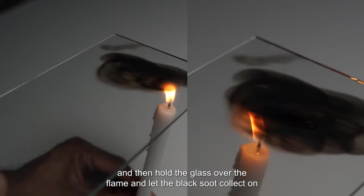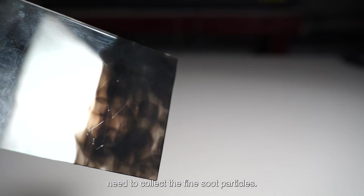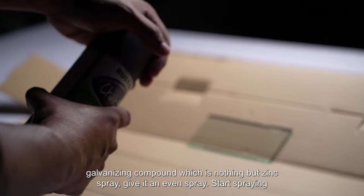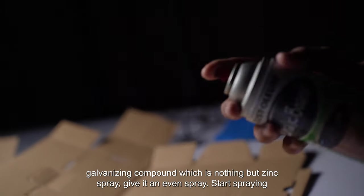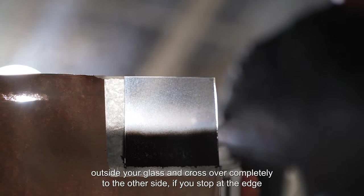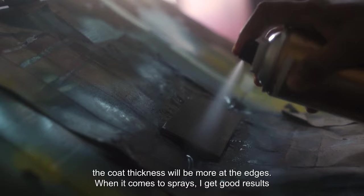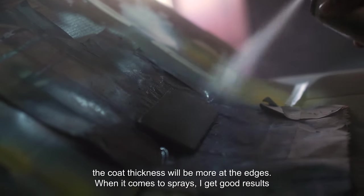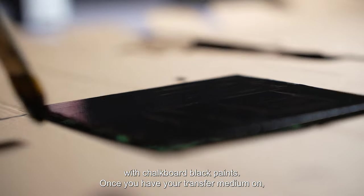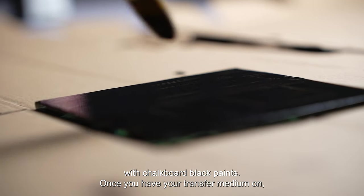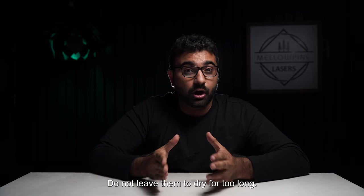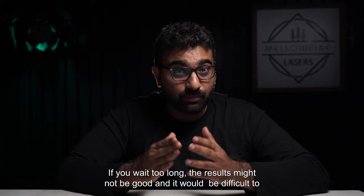Now here is a unique method: you light a candle and then hold the glass over the flame and let the black soot collect on the glass. You need to collect the fine soot particles. If you're using black spray paint or cold galvanizing compound, which is nothing but zinc spray, give it an even spray. Start spraying outside your glass and cross over completely to the other side. If you stop at the edge, the coat thickness will be more at the edges. When it comes to sprays, I get good results with chalkboard black paints. Once you have your transfer medium on, wait for them to dry till they are dry to touch. Do not leave them to dry for too long. If you wait too long, the results might not be good and it would be difficult to remove the paint after engraving.